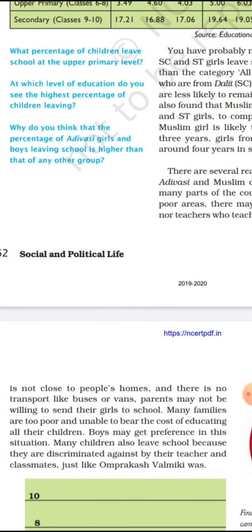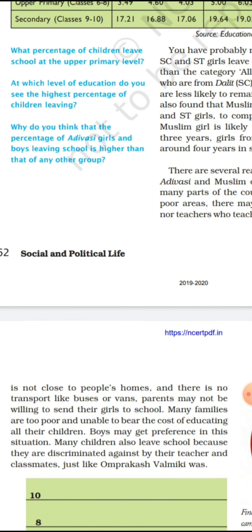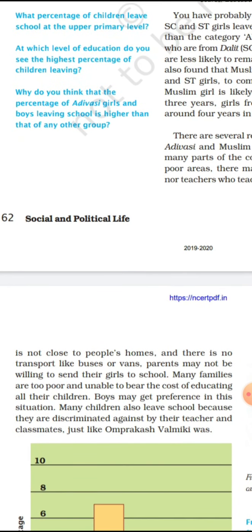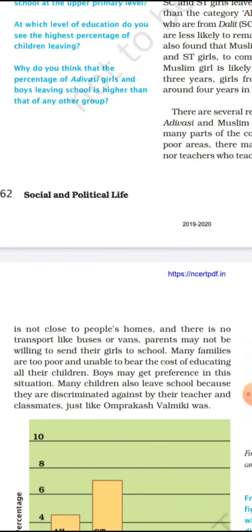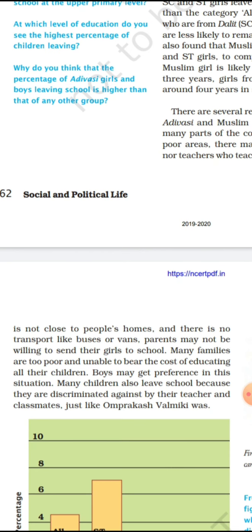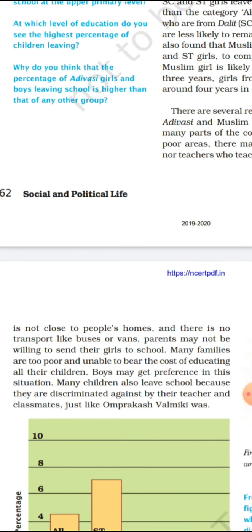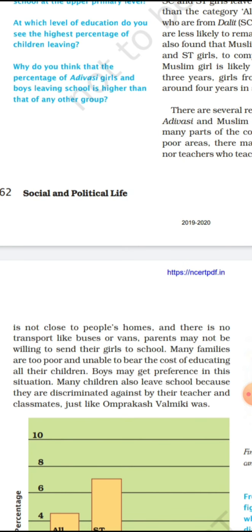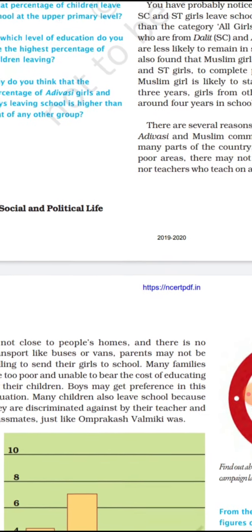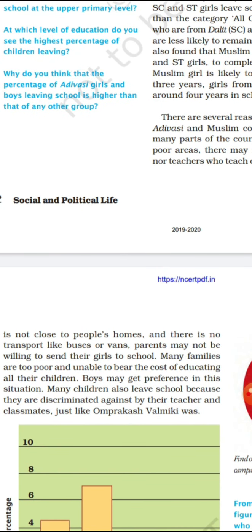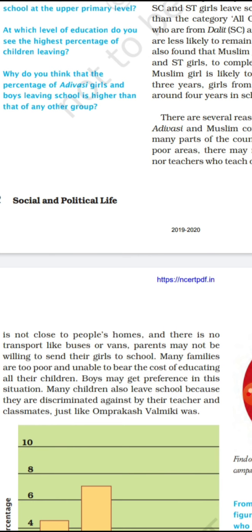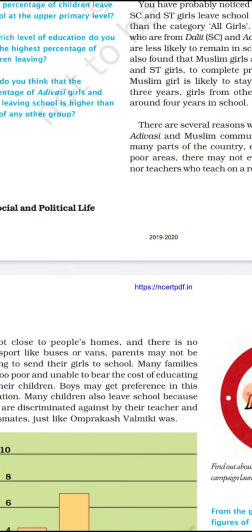If a school is not close to people's homes and there is no transport like buses, parents may not be willing to send their girls to school. Many families are also too poor — the cost of education is a main reason. Boys may be given preference in such situations. Many children also leave school because they are discriminated against by teachers and classmates, just like in the example of Omprakash Valmiki.